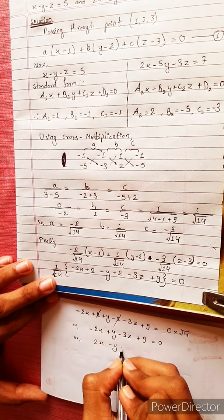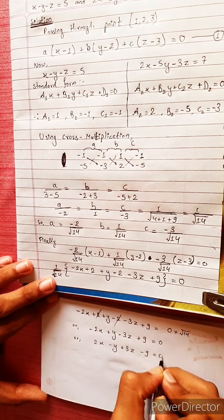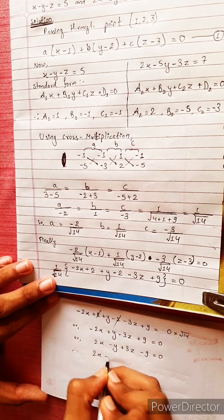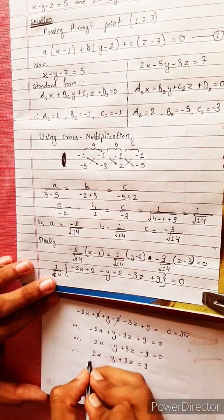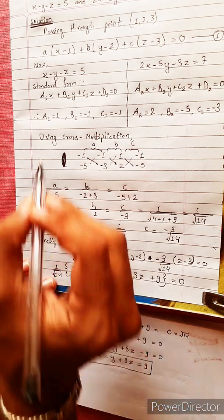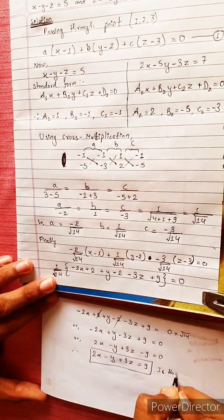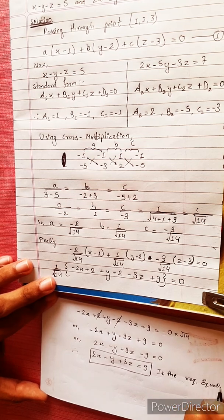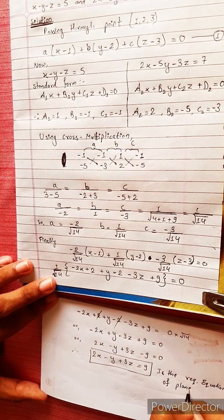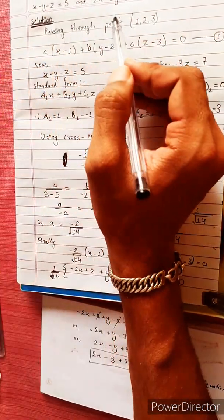Changing signs, the required equation of the plane is: 2x - y + 3z - 9 = 0. This is the equation of the plane passing through point (1,2,3) and normal to the given planes.